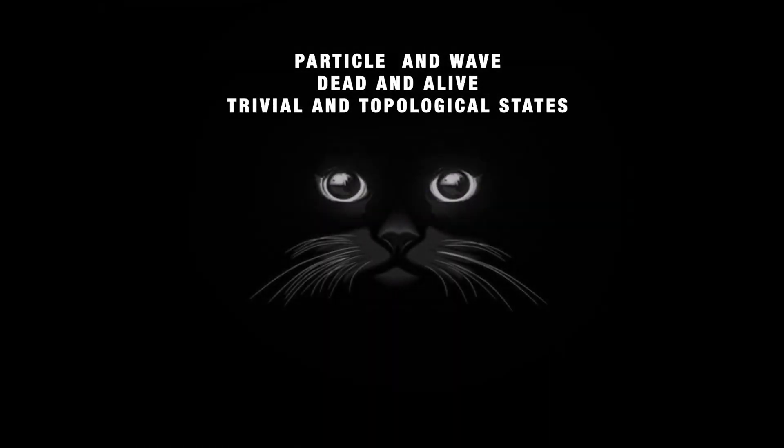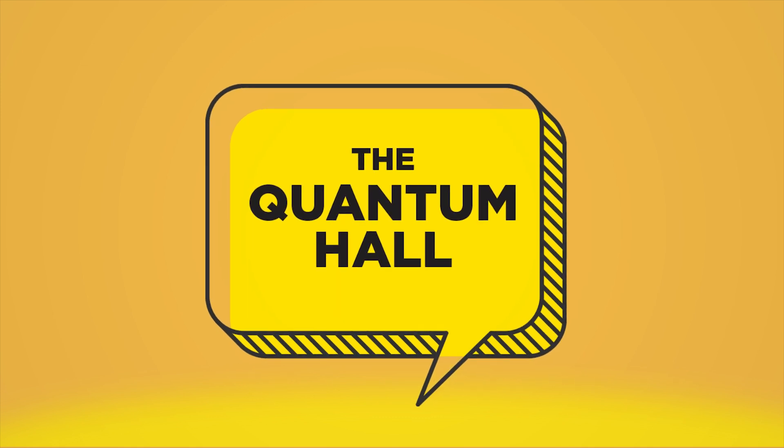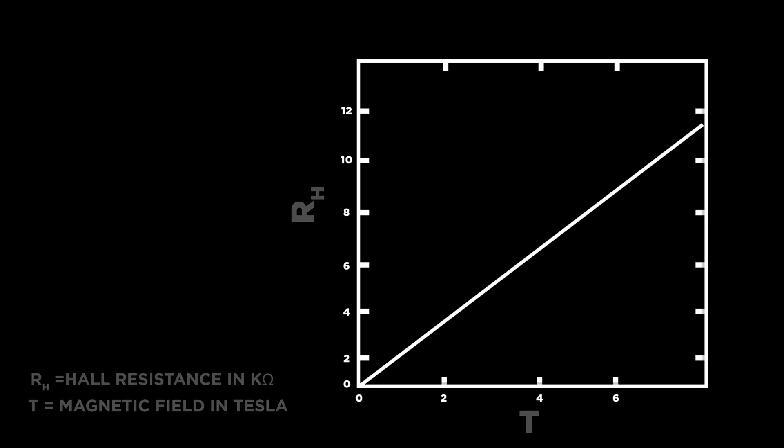Presenting the quantum Hall effect. In 1980, Klitzing connected a thin gold strip of metal to an electric source and put it under extreme magnetic force. He expected the Hall resistance graph to look like this...